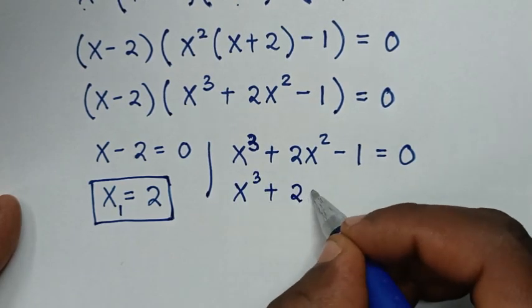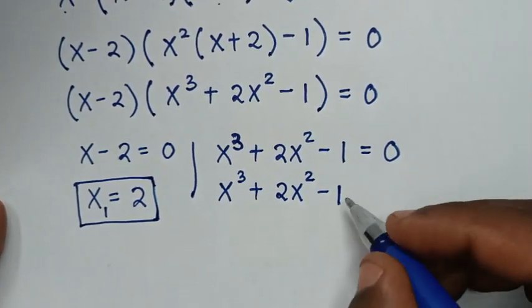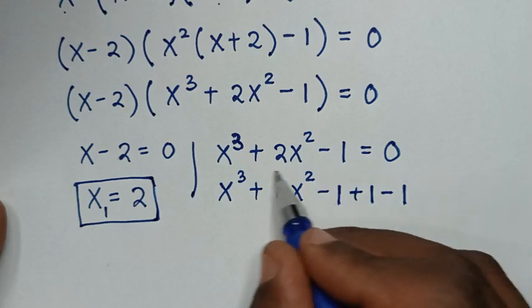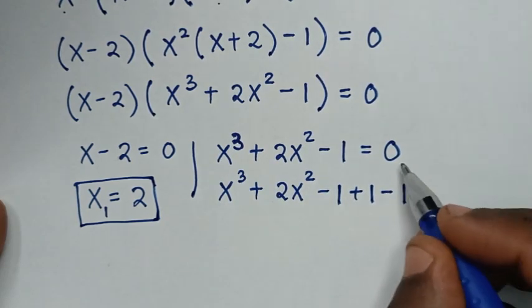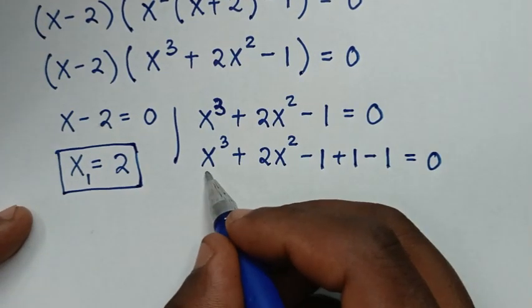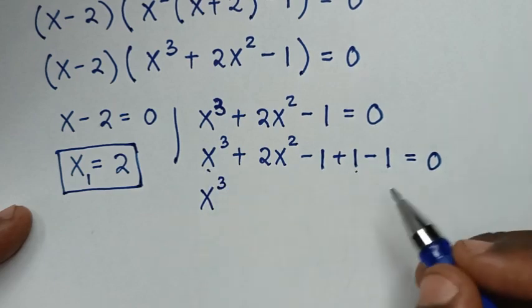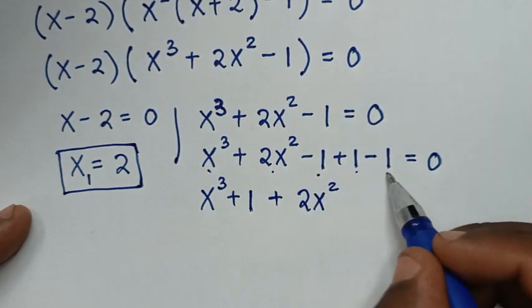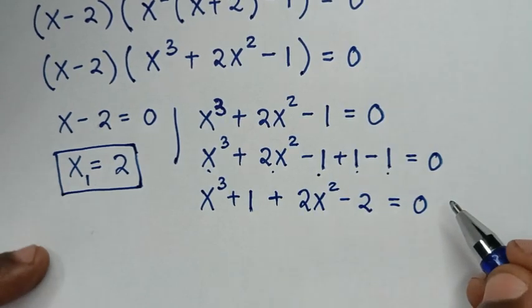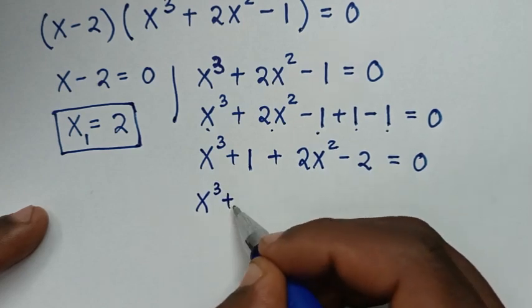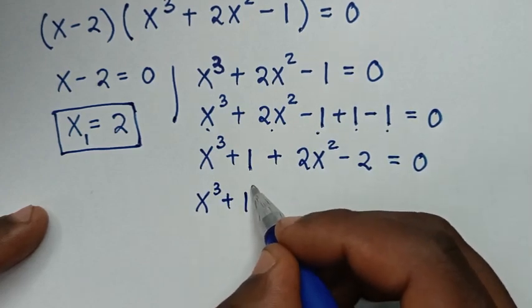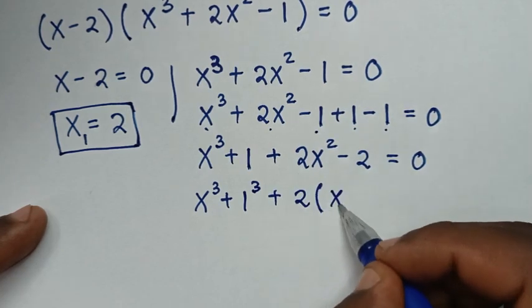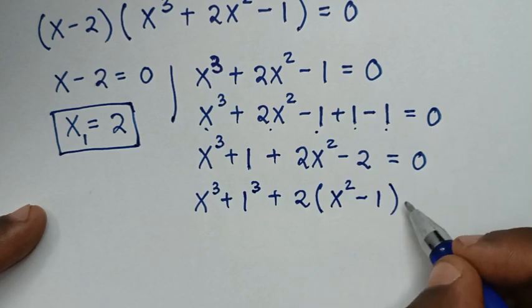To solve the cubic x³ + 2x² - 1 = 0, we add 1 and minus 1, which equals 0, to help factor. We rewrite it as (x³ + 1) + (2x² - 2) = 0. Then we factor out 2 from the second group: (x³ + 1) + 2(x² - 1) = 0.